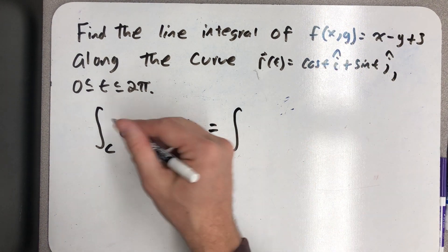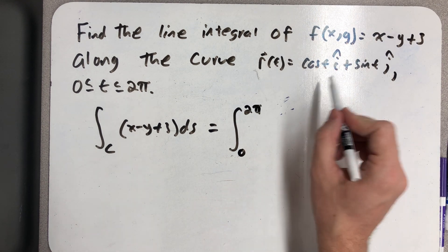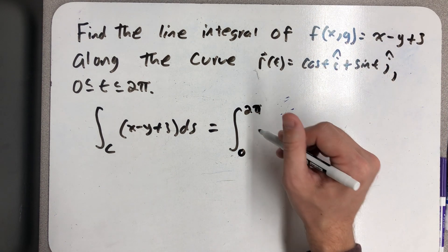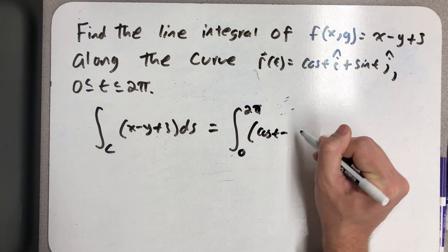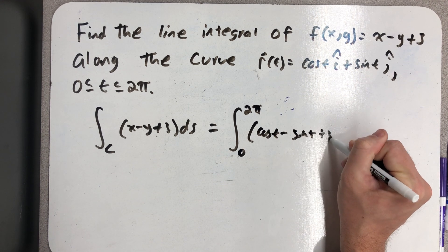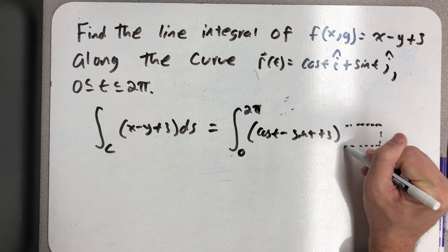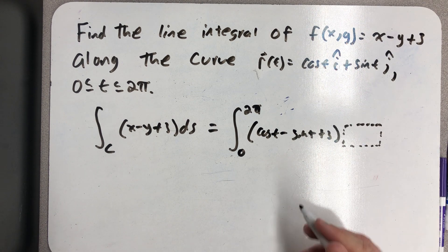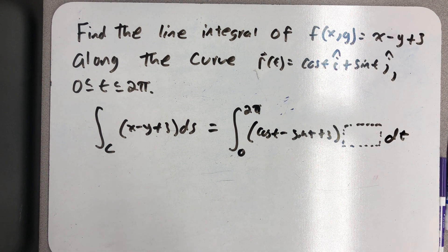So I can go on and make the substitution. I know I'll be integrating from 0 to 2π, and I plug x in for x and y in for y, and so I would have cos(t) - sin(t) + 3. And here I need to remember that I'm going to need to plug in the speed with respect to t, and then my final integral will be with respect to t.